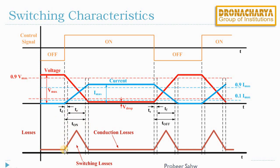There is certain loss across the switch known as switching loss, because it appears only when the switches are making a transition from off to on state or on to off state. As long as the switch is desired to be on, we keep the control signal positive and the current through the switch is maintained. An ideal switch must have zero voltage drop when conducting current, but in this case there is a very small or negligible voltage drop across the switch. Due to this negligible voltage drop, there is a very small conduction loss, which is almost negligible compared to the switching losses.